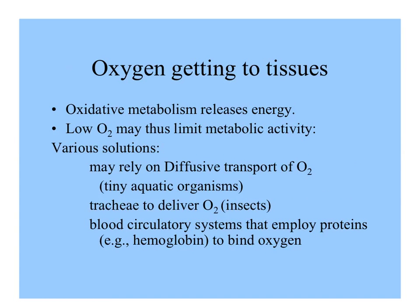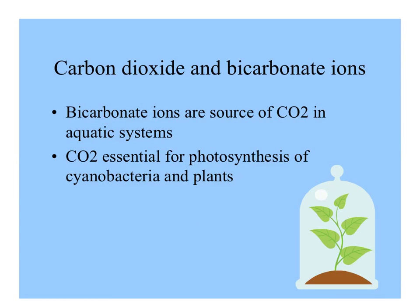There's a challenge for a three-dimensional organism in getting oxygen inside to its tissues, because all cells need to respire almost all the time, and low oxygen could limit metabolic activity. Small organisms can rely entirely on diffusion of oxygen. Relatively small insects and arthropods have tracheae — openings to an internal air pipe system. Bigger organisms use blood circulatory systems with proteins that carry oxygen. It's also important to remember that in water, carbon dioxide comes from bicarbonate ions dissolved in the water, and this CO₂ is essential for the photosynthesis of aquatic plants, cyanobacteria, and algae.